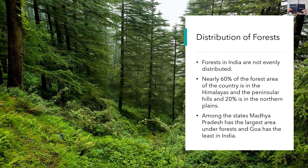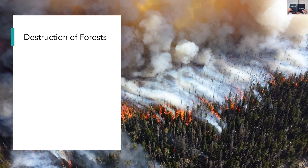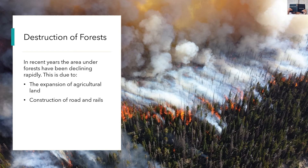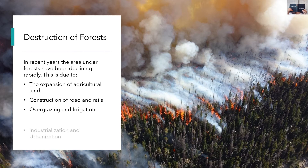Destruction of Forest: Forests play an important role in the national economy, but areas under forest are declining due to over-exploitation by man. Some of the reasons are: expansion of agricultural land — forest areas cleared to meet the growing population's need for food; construction of roads and railways; over-grazing; forest lands cleared for irrigation projects; industrialization and urbanization — growth of industries and cities; and forest fires or wildfires, caused naturally or by human negligence.